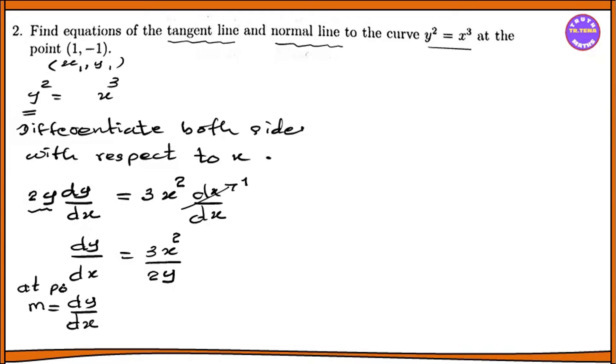At point (1, -1), m equals 3 times 1 squared divided by 2 times negative 1. So 3 divided by minus 2, which equals minus 3/2. That is the slope of the tangent.